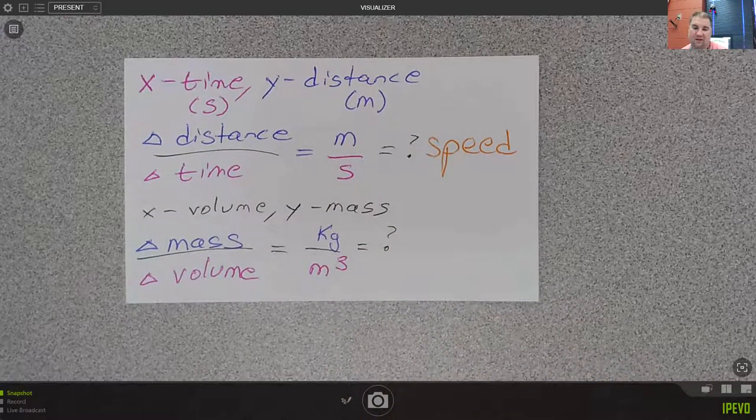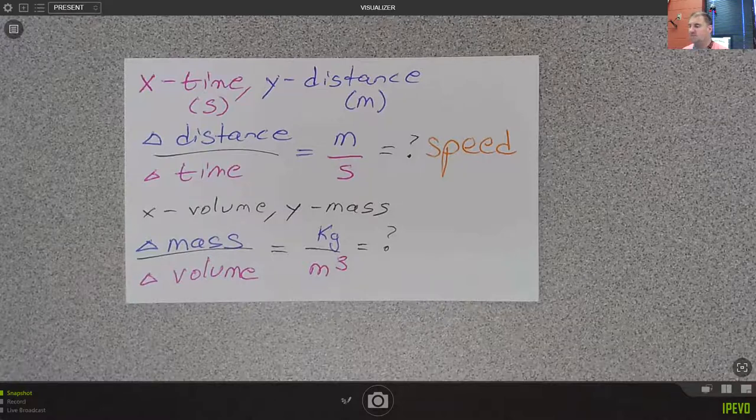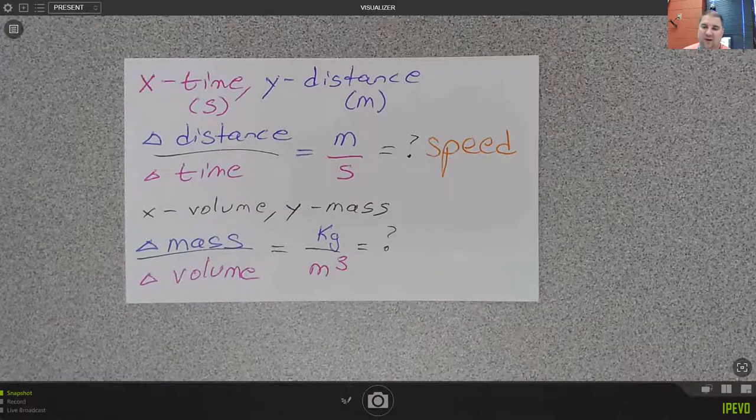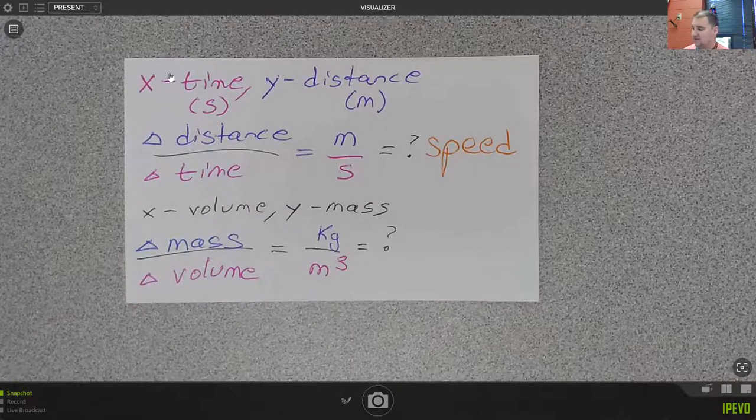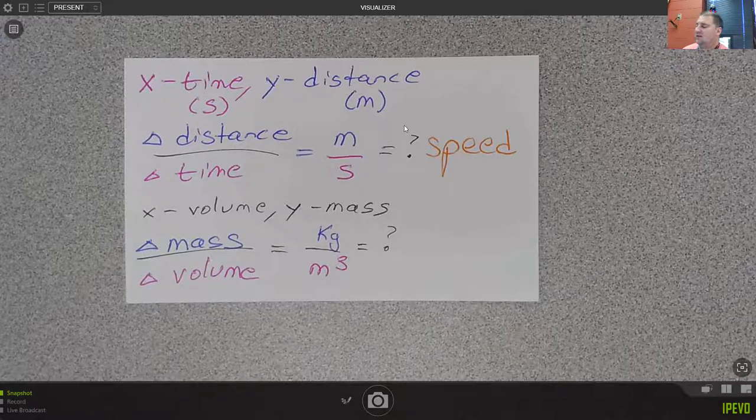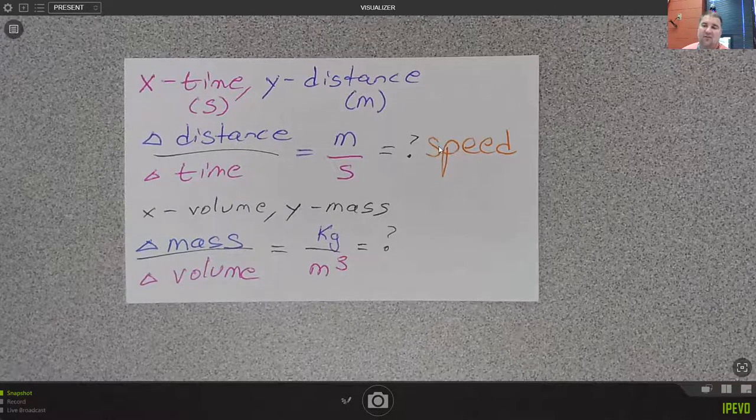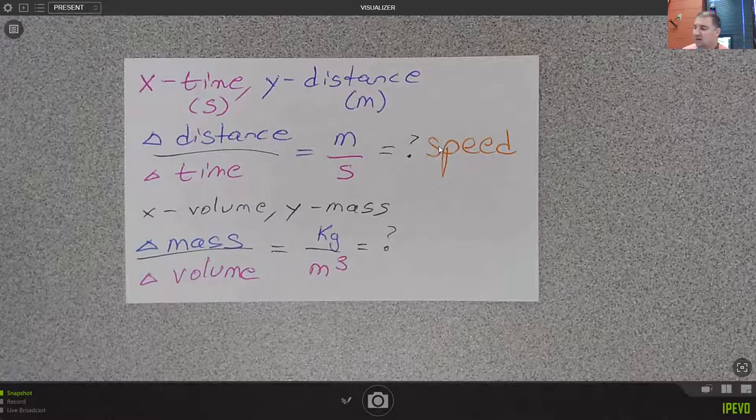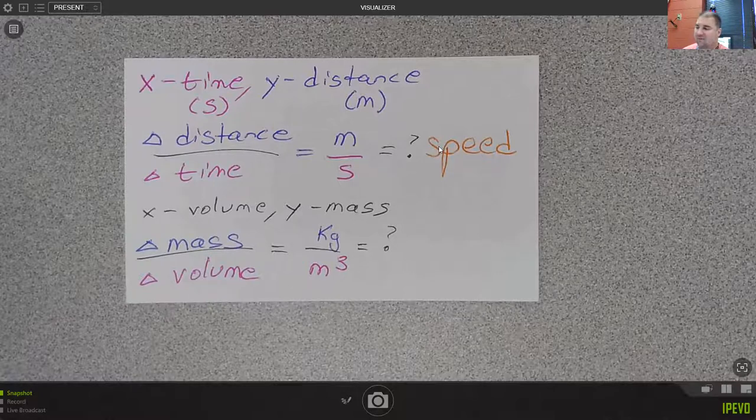So on this graph that I've created and what I would like for you to do with a graph that you create using the same gizmo is describe the graph, okay? Describe the motion of the two objects that you've shown on the graph.